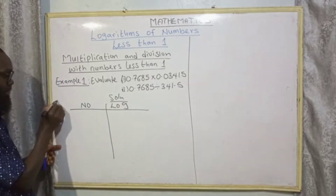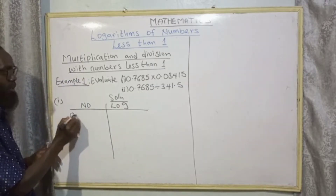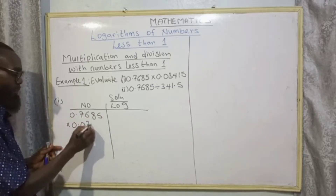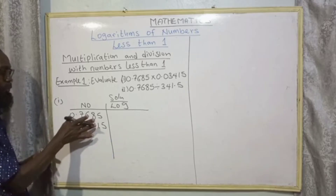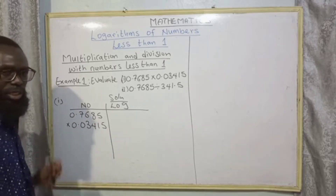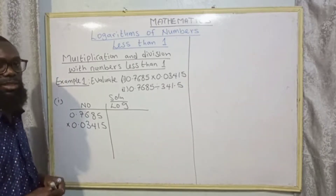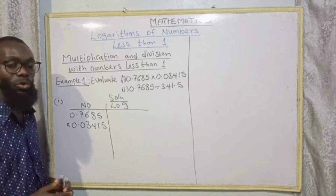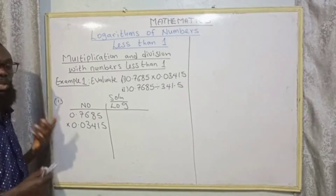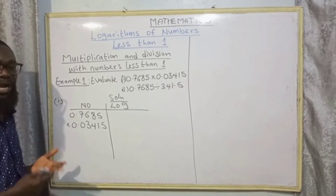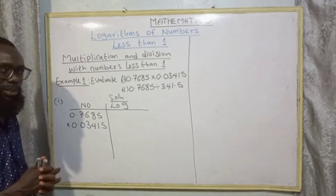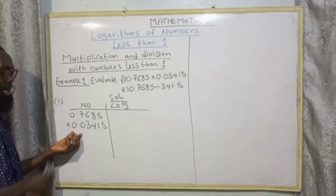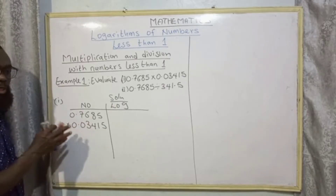So we set up the logarithm table with number and log. We have 0.7685 multiplied by 0.03415. Now we want to look for the integer of the first one. To get the integer, as covered in our previous classes, you cover the first digit and count how many digits are at the back of the first digit without jumping decimal points.